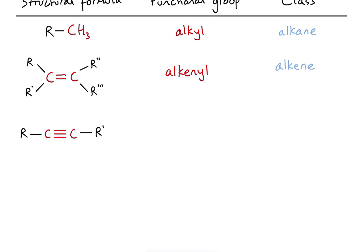Next, we've got a carbon-carbon triple bond. If we see a carbon-carbon triple bond, this is the alkynyl functional group — with a Y instead of an E — and that would belong to the class known as the alkynes.